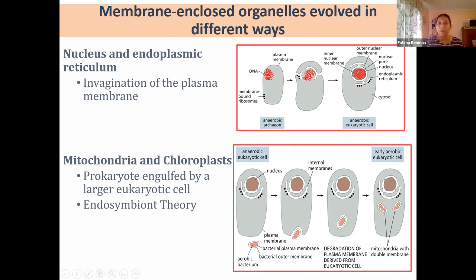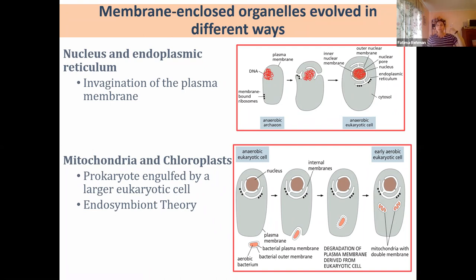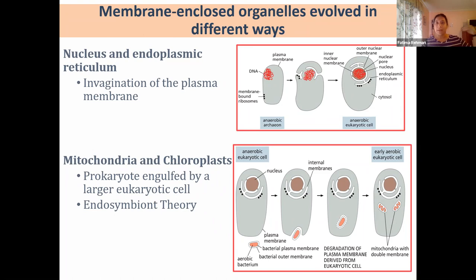Outside of the nuclear membrane, you see that extension continuing on to create enclosed environments — these are what we know as the endoplasmic reticulum. Some of these are going to be studded with ribosomes for protein synthesis — that is the rough ER. While a portion not studded with ribosomes is called the smooth ER. The endomembrane system includes the plasma membrane, endoplasmic reticulum, nuclear membranes, and transport vesicles including the Golgi complex and the little vesicles that form from it.